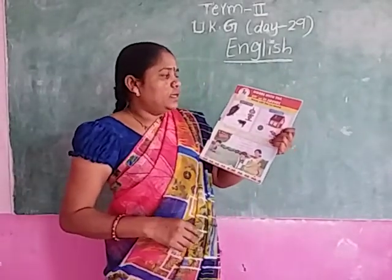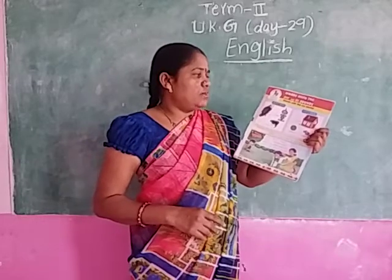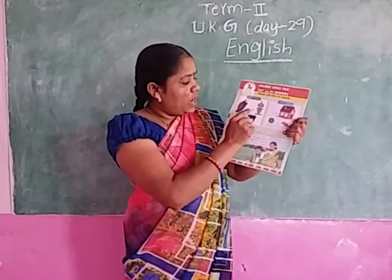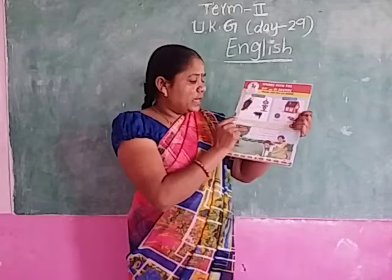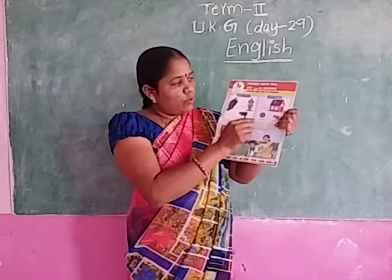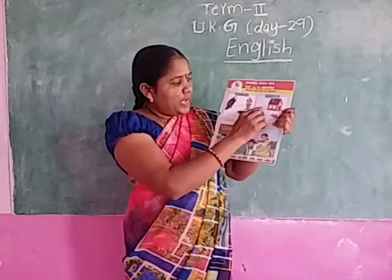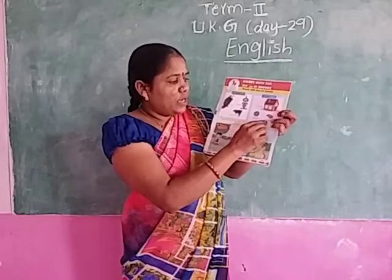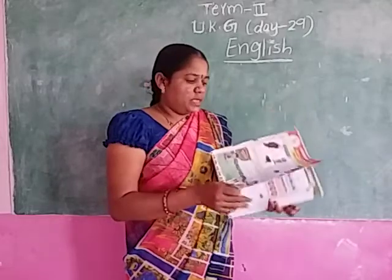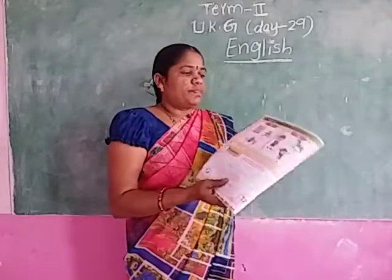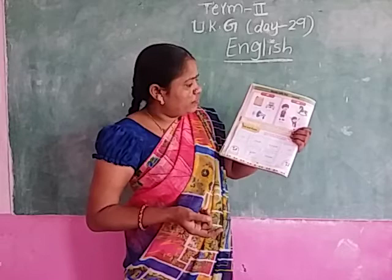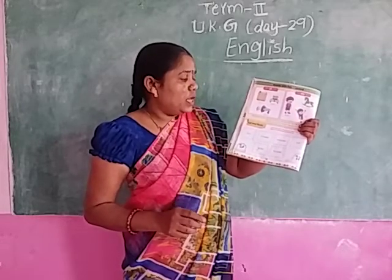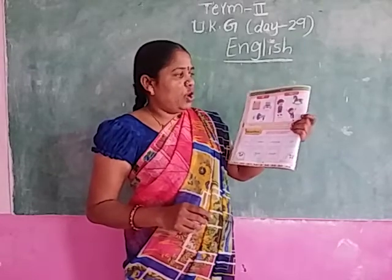Words with OW and OI sounds. Words with OW: O-W-L, owl. C-L-O-W-N, clown. C-O-W, cow. N-O-I-S-E, noise.